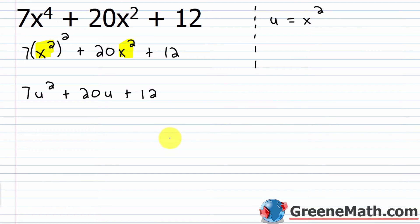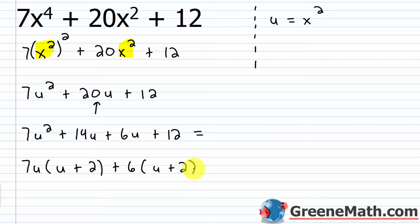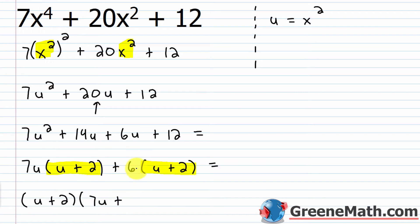We take those two integers and rewrite the middle term. So I have 7u squared plus 14u plus 6u plus 12. Now factoring by grouping: from the first two terms I pull out 7u, leaving u plus 2. From the second group I pull out 6, leaving u plus 2. So I can pull out the common binomial factor of (u + 2), giving (u + 2)(7u + 6).